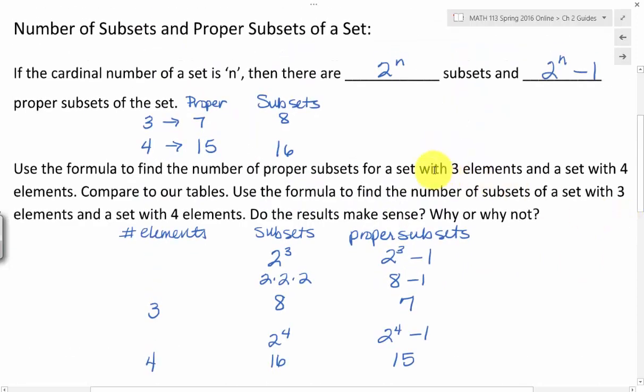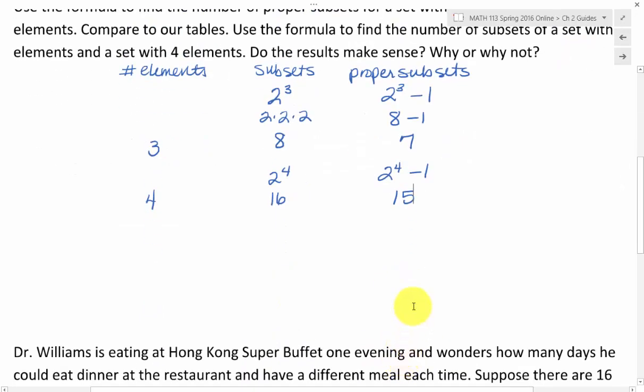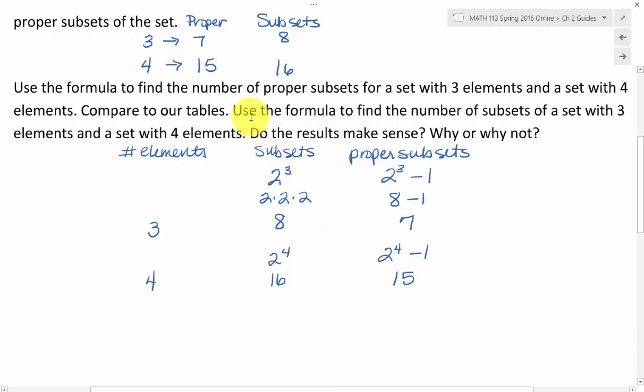Let's take a look. We said if you had four elements in the set, we counted up 15 proper subsets, 16 subsets. There's the 16 subsets and the 15 proper subsets. So it looks like that matches what we came up with.